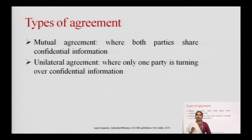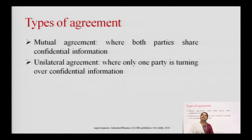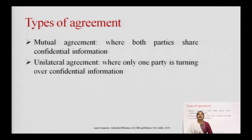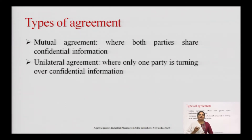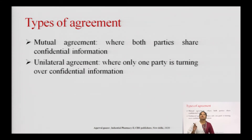A confidentiality agreement can be of two types: mutual agreement or unilateral agreement. In a mutual agreement, both parties share confidential information. In a unilateral agreement, only one party is turning over the confidential information.